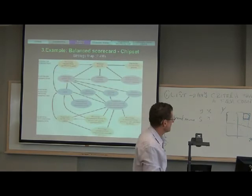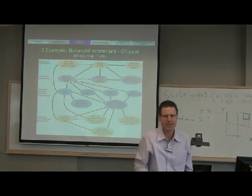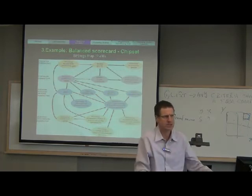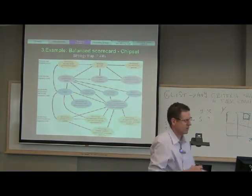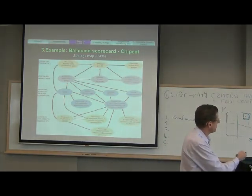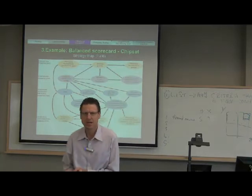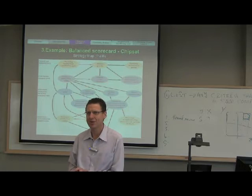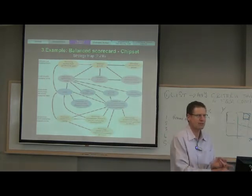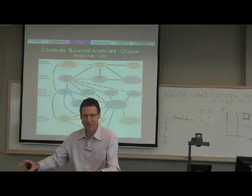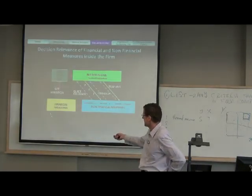This is the first part of the balanced scorecard — the financial perspective. This is the top; this is the end of the story. The beginning of the story is at the bottom, in learning and growth. CEOs don't care about that, but you have to if you want to engineer change in the organization. The next two and a half to three weeks we're going to focus on how to build up the other three perspectives. The C managers are questioned on financial results — return on investment, return on assets, profit centers — and they are rewarded on those measures.